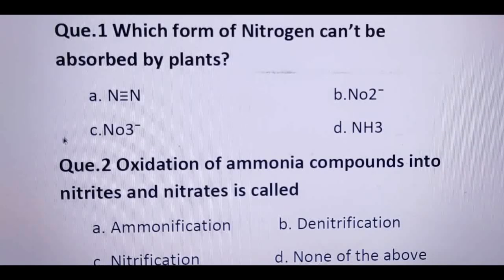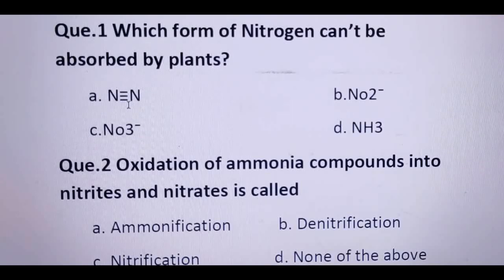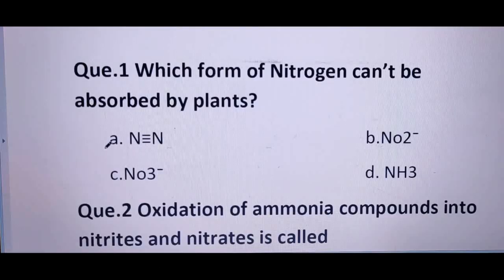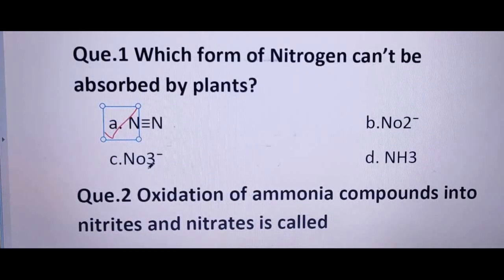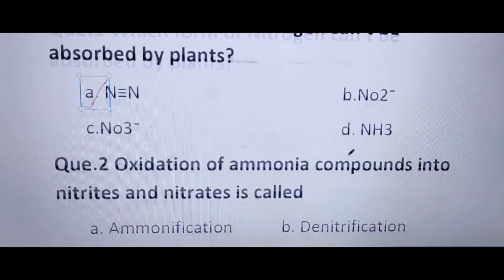As we discussed, option A — molecular nitrogen — is correct. Nitrite, nitrate, and ammonia are all usable forms for plants.